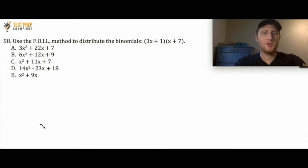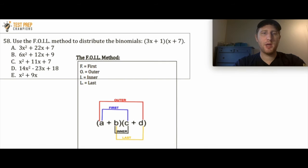Use the FOIL method to distribute the binomials (3x + 1)(x + 7). Let's have you pause the video, give this question a shot, and when you're ready, we'll go over how to do it.